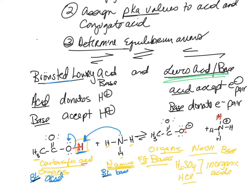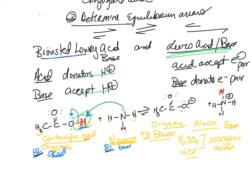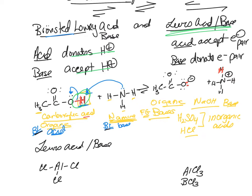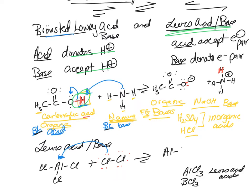Lewis asked: can we have an acid-base reaction without the transfer of a proton? And the answer is yes. In Lewis acids and bases, a lot of your trivalent metals — like aluminum trichloride, boron trichloride — these are your Lewis acids. The reason is they have an unhybridized p orbital, so they can accept a lone pair. Basically, electrons from chlorine donate to the aluminum's unhybridized p orbital, and it can form a bond.